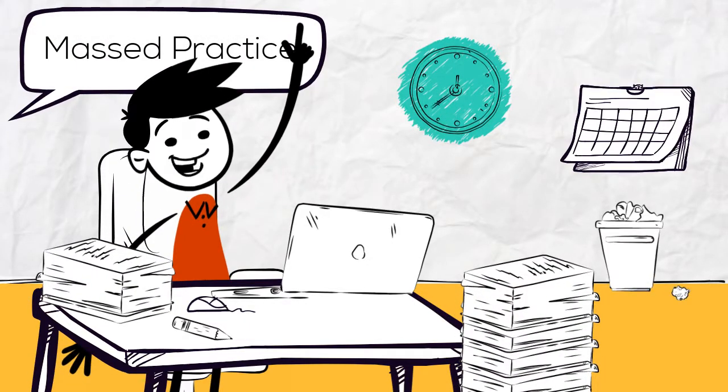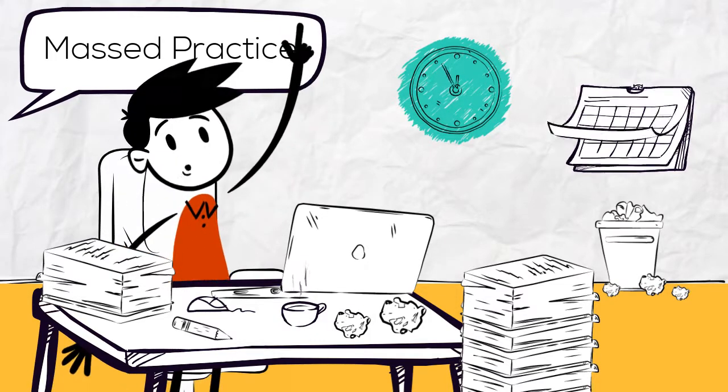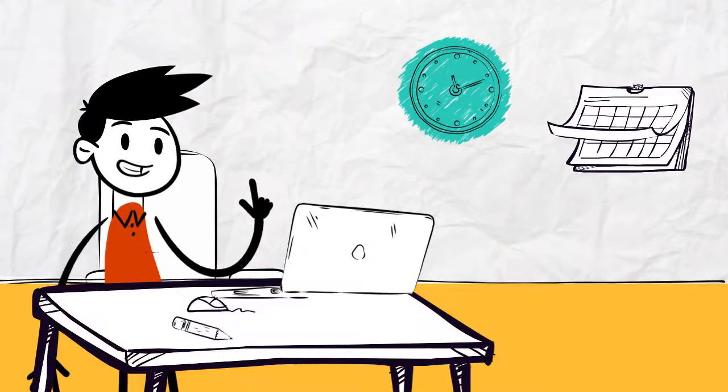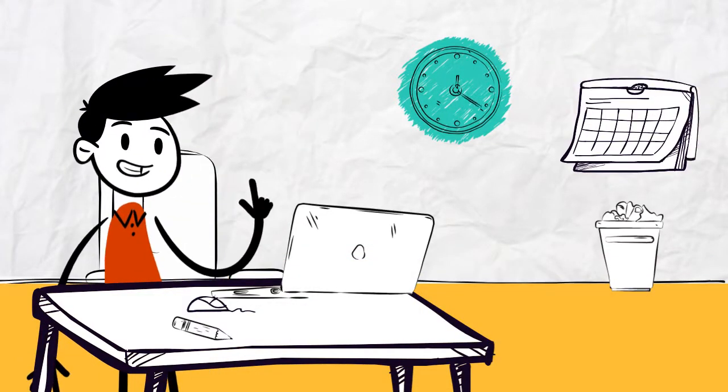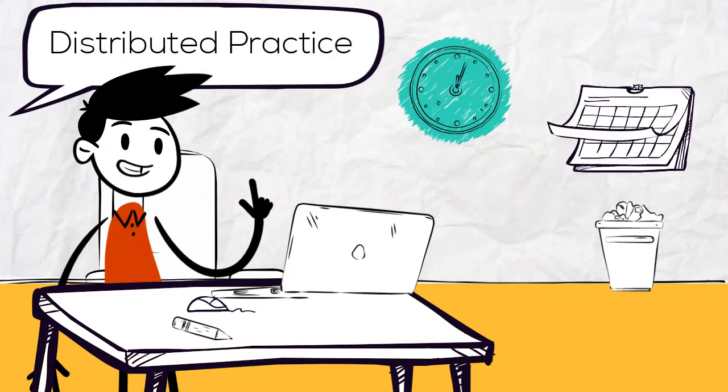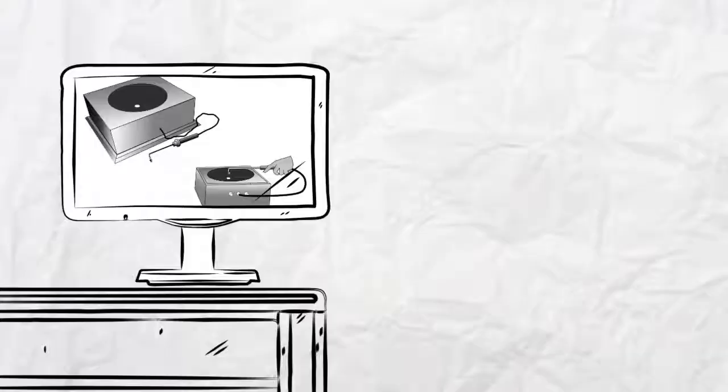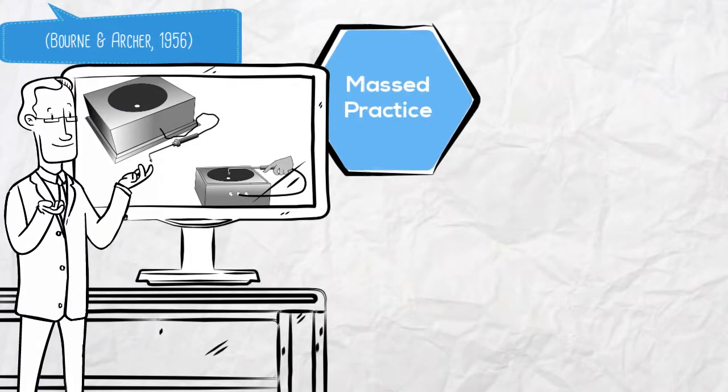Johnny was using a form of massed practice, which involves practicing non-stop with no rest. This kind of practice may feel effective, but is in fact often very ineffective. A better method of learning is distributed practice, which involves separating practice sessions with rest periods.